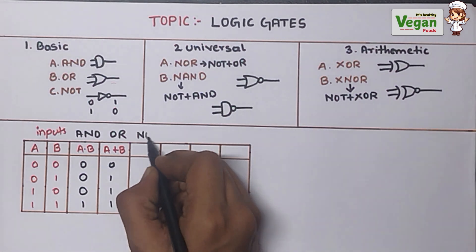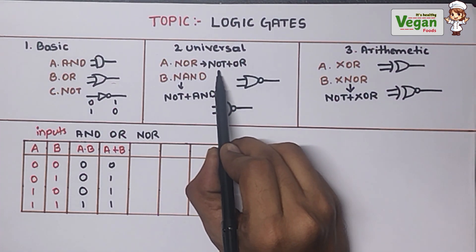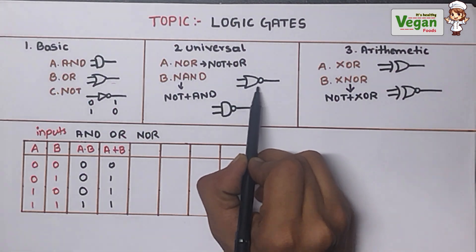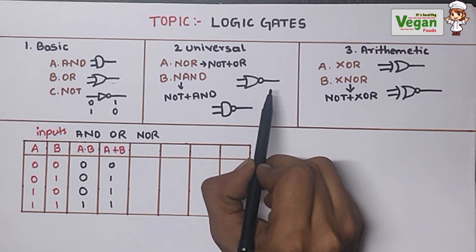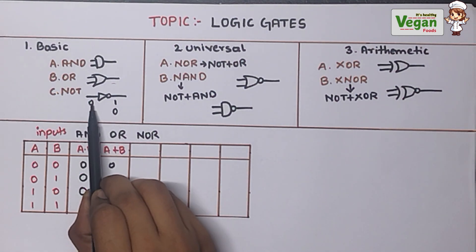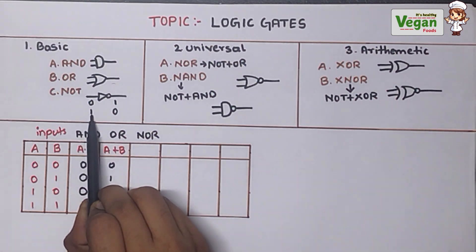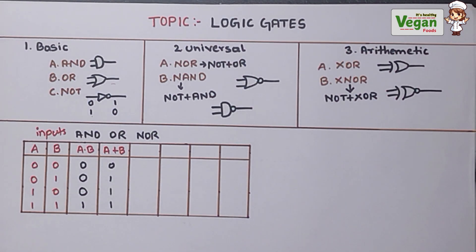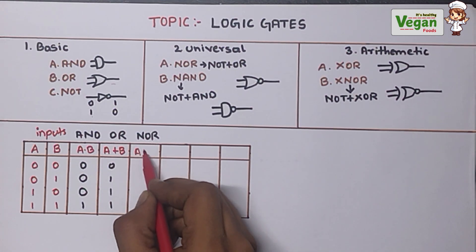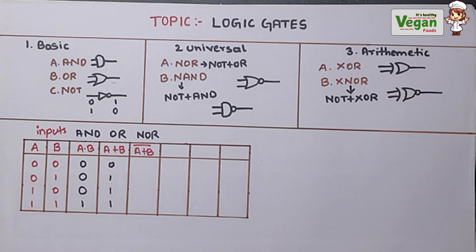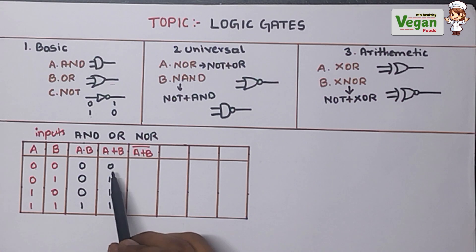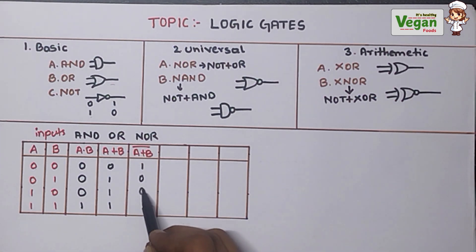Next is the NOR gate. NOR gate is the combination of NOT gate with OR gate — first we represent the OR gate, then we put the NOT gate in front of it. The NOT gate complements its input: if you give 0 it becomes 1, if you give 1 it becomes 0. The formula is the complement of OR gate: that is A plus B bar. So the OR gate output values get complemented — 0 becomes 1 and 1 becomes 0.